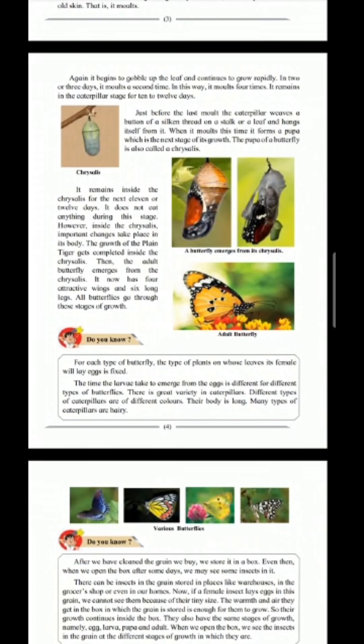For each type of butterfly, the type of plant on whose leaves its female will lay eggs is fixed. The time the larva takes to emerge from the eggs is different for different types of butterflies. There is a great variety in caterpillars — different types of caterpillars are of different colors, their body is long, and many types of caterpillars are hairy also.